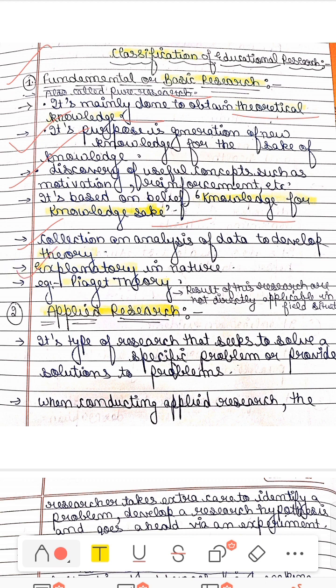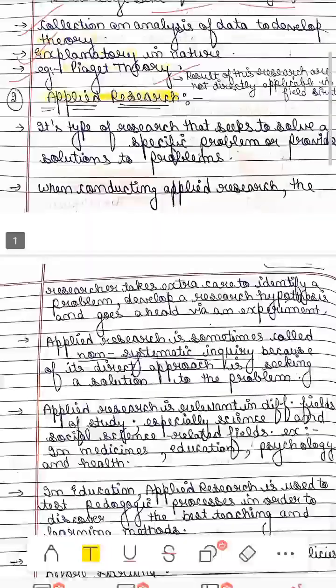Discovery of useful concepts, like motivation or reinforcement, what is all? Theory portion. This is knowledge for knowledge's sake. Then collection and analysis of data to develop the theory. You have to develop theory for which you are working and researching. It's explanatory in nature. You can explain what is motivation, what are motivation types, what are motivation implications, what are education implications. Just for the theory research. The result of this research is not applicable in the field situation.